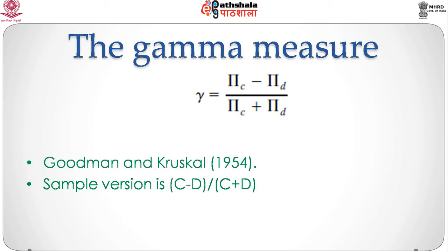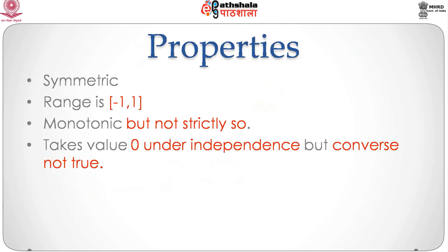The first and simplest measure is the gamma measure. For the population, gamma is defined as gamma = (pi_c − pi_d) / (pi_c + pi_d) — that is, the probability of concordance minus the probability of discordance divided by their sum. This measure is due to Goodman and Kruskal in 1954. Its sample estimate is given by (C − D) / (C + D), where C denotes the observed number of concordances and D the observed number of discordances in the dataset.